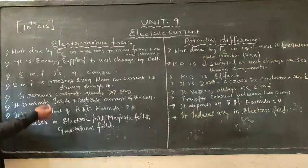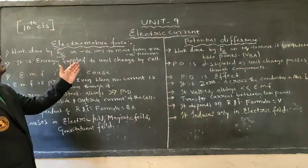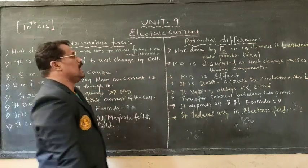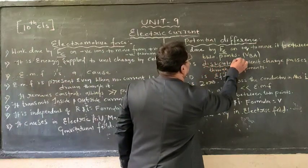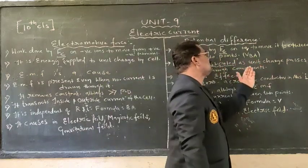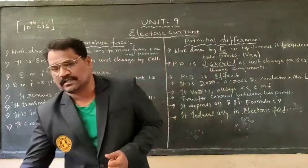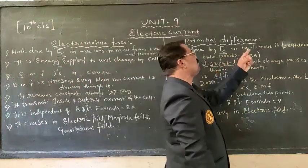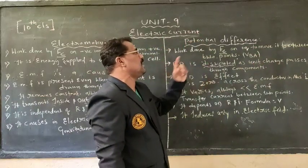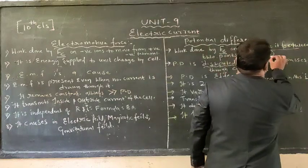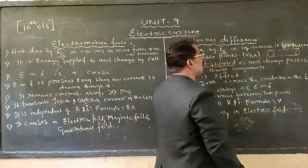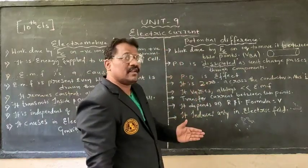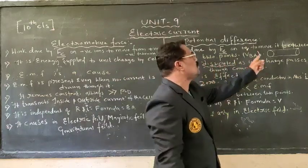That is potential difference. Coming to the second point: electromotive force is energy supplied to unit charge by the cell — it is supplying energy to the charge. Whereas potential difference is energy dissipated as unit charge passes through a component. Dissipated means internal energy is transforming from the initial point to the final point.